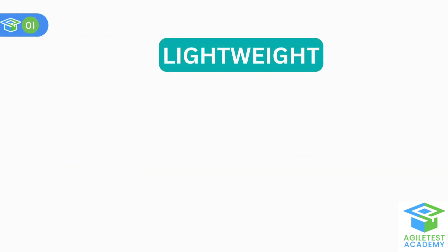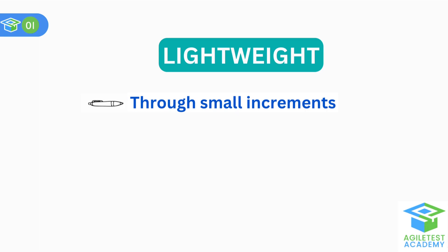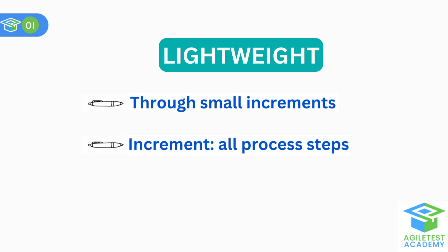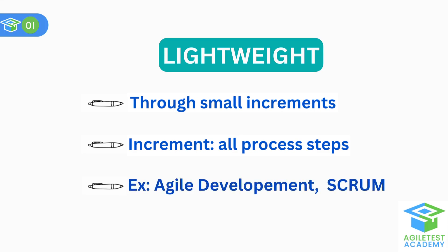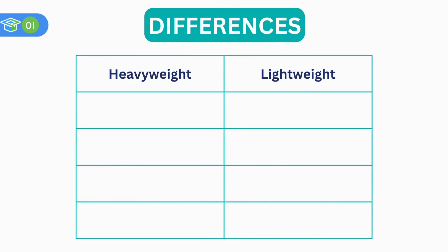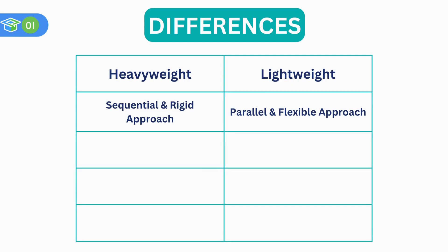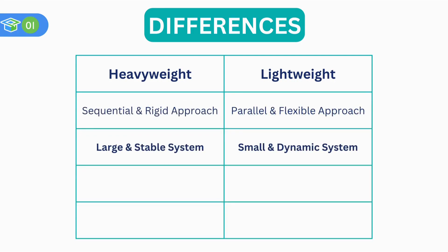Lightweight method is when the development team releases working software in small increments and develops the plan incrementally. Each increment includes all process steps and there is an expectation that changes will be made based on the team's experiences — for example, agile development and Scrum. The main difference is that heavyweight uses a sequential and rigid approach, while lightweight uses a parallel and flexible approach. Heavyweight methodologies are suitable for large and stable systems, while lightweight are suitable for small and dynamic systems.